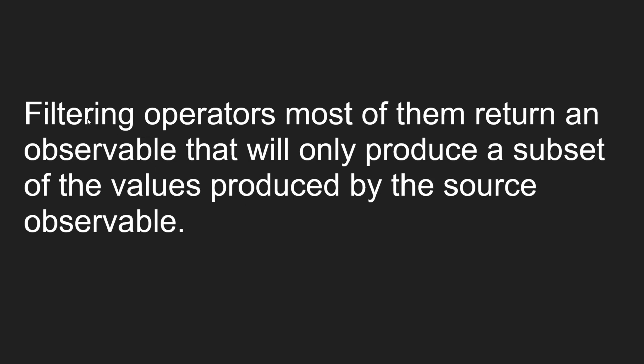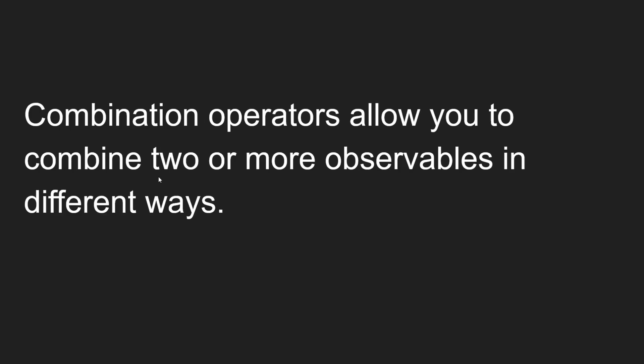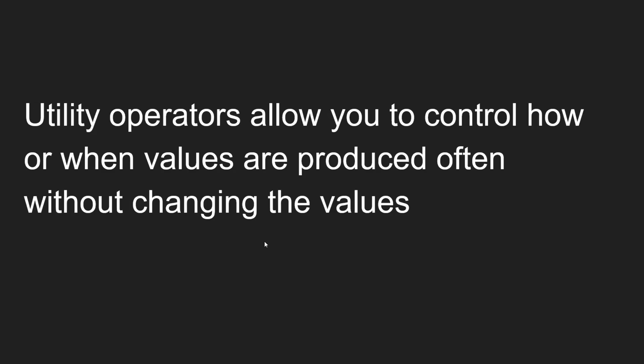Filtering operators return an observable that will only produce a subset of the values. It filters the source observable and returns only some part of the data — it won't give you new data, just a subset. Combination operators allow you to combine two or more observables in different ways. They take two observables, combine them, and give you one observable.